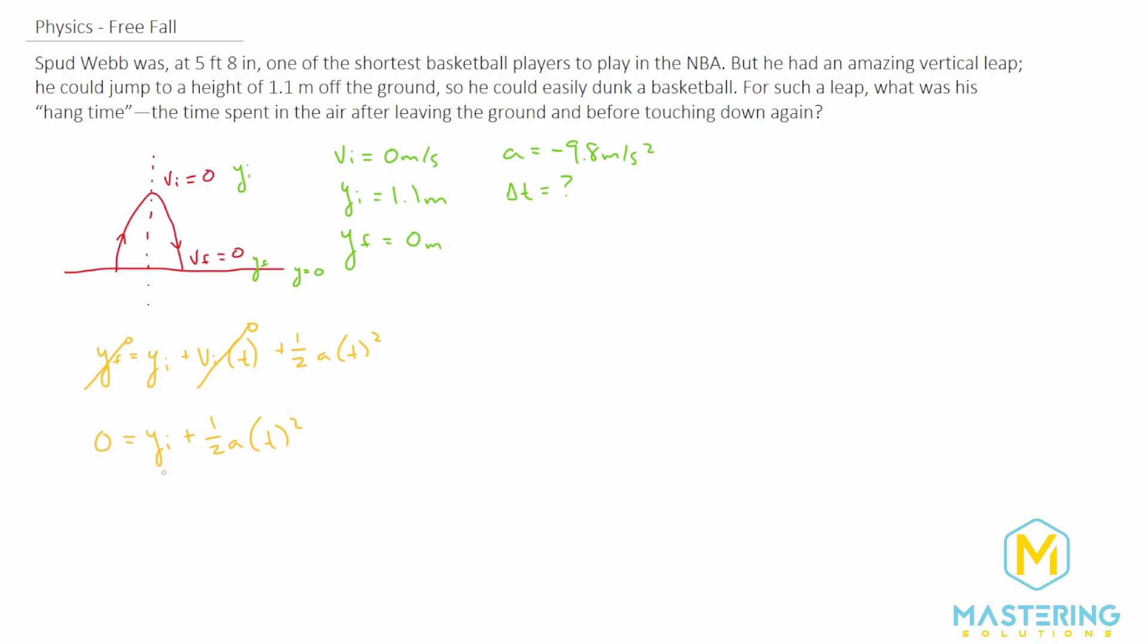Let's move the y initial over. So now we'll have negative y initial equals one half times the acceleration times time squared. And so now let's divide over to isolate t, let's divide over one half and the acceleration.